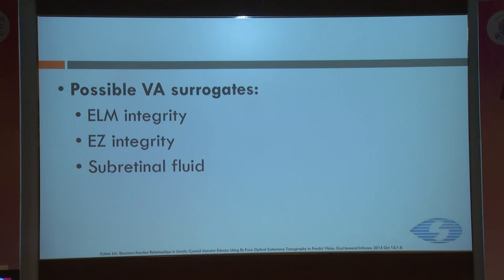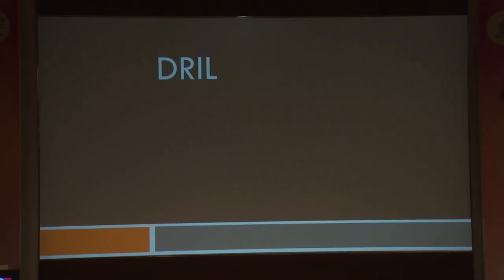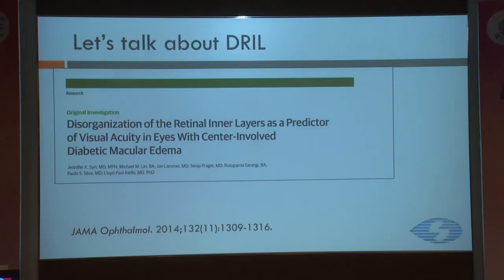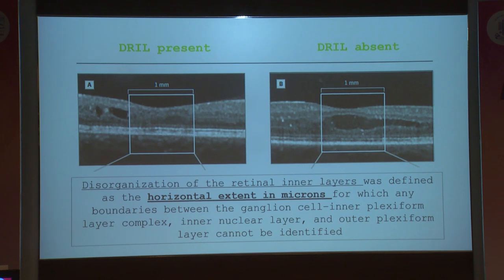Possible visual acuity surrogates have been the ELM integrity, the EZ integrity, and the presence of subretinal fluid. I will just discuss a few of the more important ones. DRILL was one of the markers published first by Dr. Jennifer Sun in 2014, and this is very important. You can see that the image itself is quite clear where the DRILL is present and where you can see the inner layers clearly and it is absent.